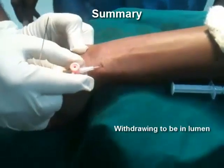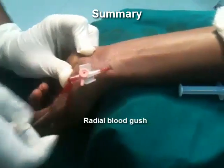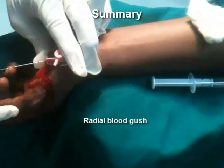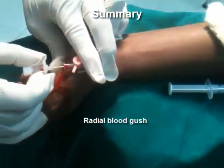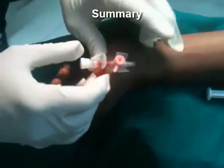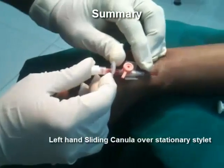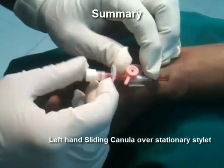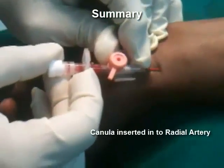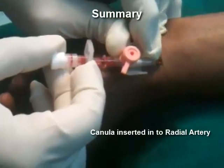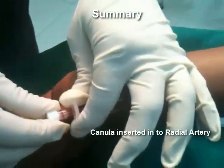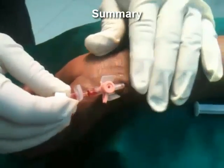This gives us beat-to-beat variation of the blood pressure recordings which are displayed on the monitor. Keep in mind several things while performing radial artery cannulation. Always perform an Allen's test to establish collateral circulation distal to the radial artery catheterization.